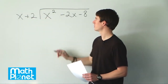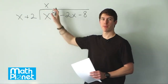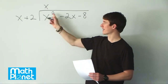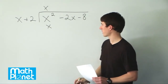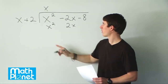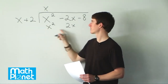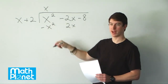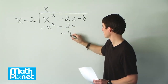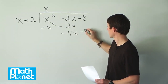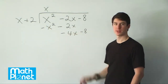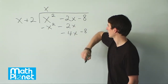What times x gives us x squared? Of course, it's just x. Then we go back and multiply this x by the quantity we're dividing by. So x times x gives us x squared, and x times 2 gives us 2x. What we're doing is subtracting this to see what we have left. Of course this cancels out, giving us zero there. Negative 2x minus 2x gives us negative 4x, and we still have this negative 8. So now we start again — what can we multiply this x by to eliminate this negative 4? It's just going to be negative 4.